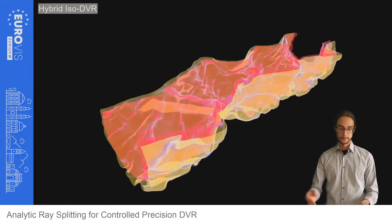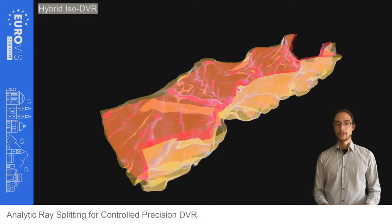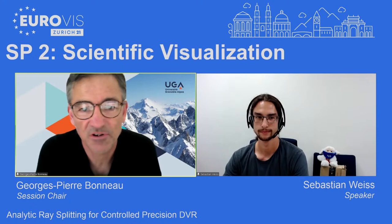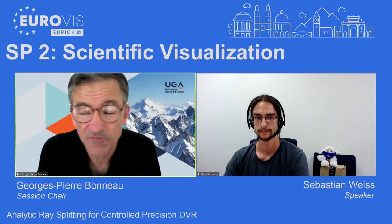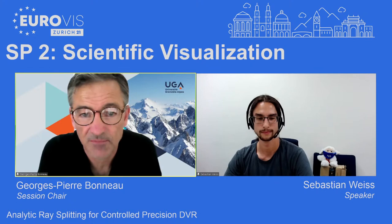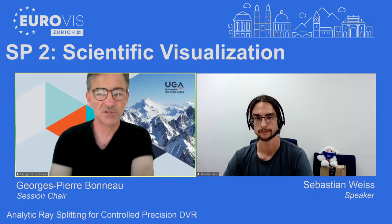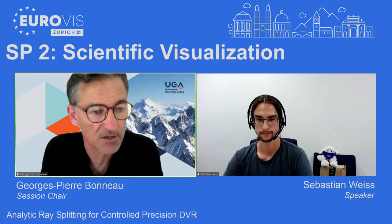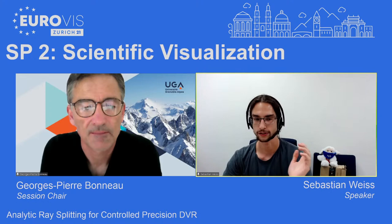Here is a comparison of this hybrid method with and without the volumetric envelope. Thank you for your attention. Thanks for this very nice first talk. Feel free to ask questions in the Discord chat. I have some questions. Can you actually interactively change the transfer function and see changes in the rendering interactively? Yes, everything is interactive — you can change the transfer function, camera, and all parameters.